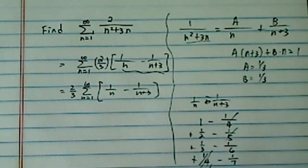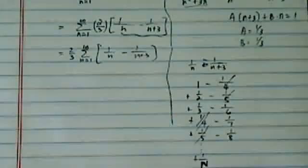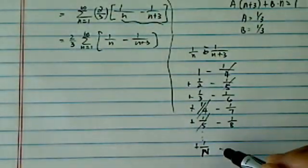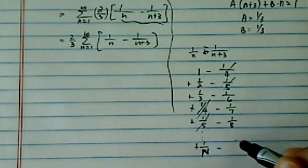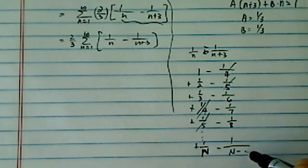All the way to plus 1 over n, bigger n, we're doing the partial sum here, and then partial sum 1 over n minus 3.